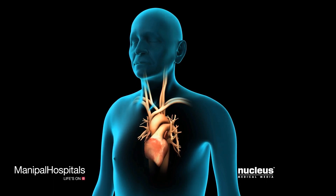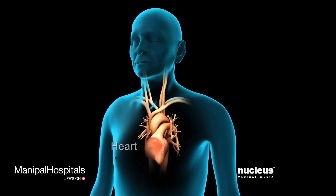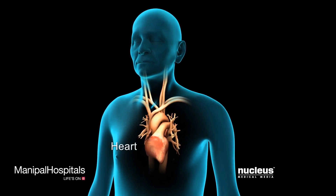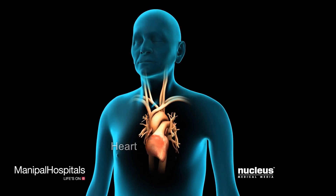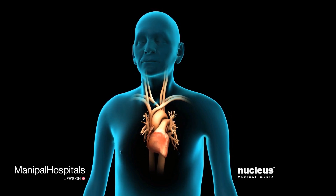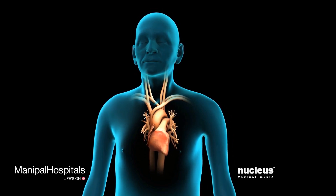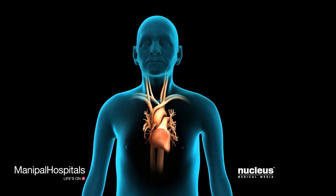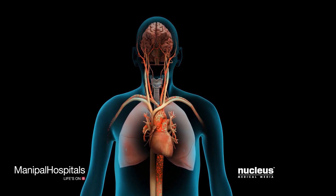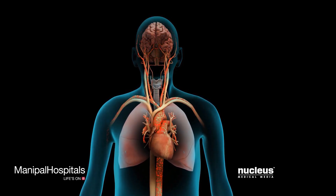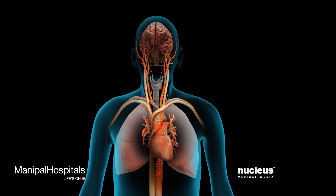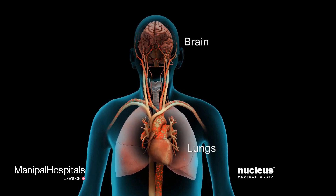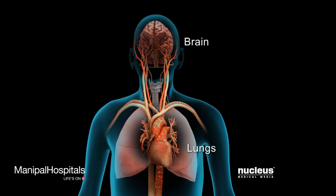Depending on activity level, the heart beats about 60 to 100 times per minute. It may be higher during exercise or lower at rest. A normal heart rate and rhythm ensures the delivery of oxygen-rich blood to all of the body's organs, such as the brain and lungs.